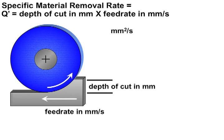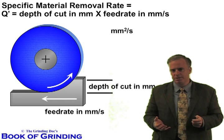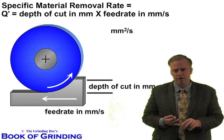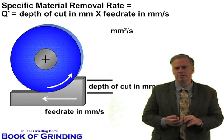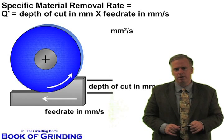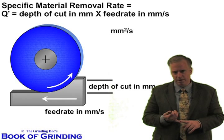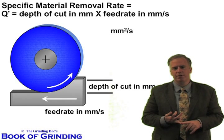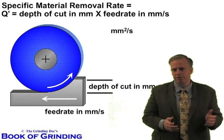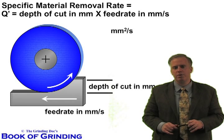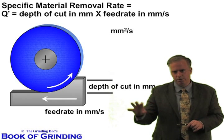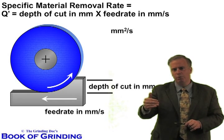The Q' value is just how much material you are removing per unit time. The calculation — a very typical calculation you see a lot, especially with wheel manufacturers and in academic articles — is: what's my Q', or what's my specific material removal rate? It's a very straightforward calculation: depth of cut in millimeters times feed rate in millimeters per second. You can do the conversion from inches to millimeters per second. What you get is a value in millimeters squared per second, which is your material removal rate. But what we do is take the wheel width out of the equation.